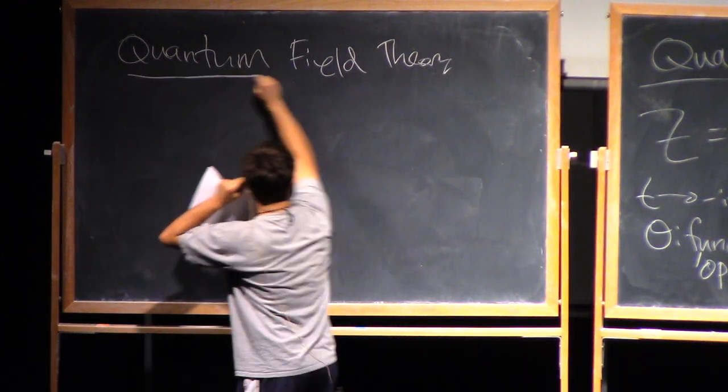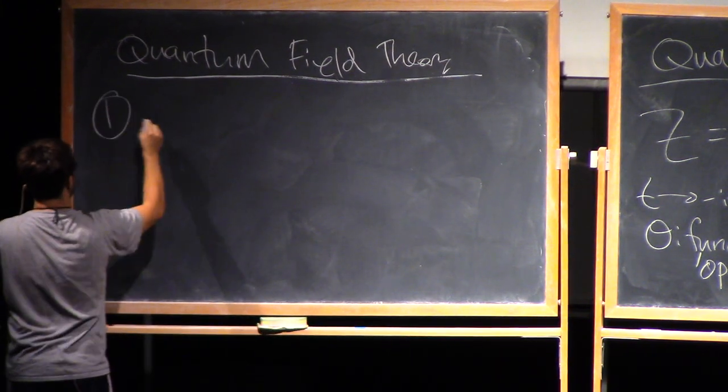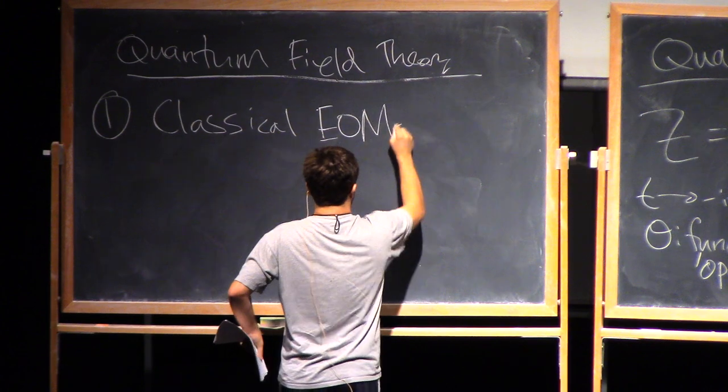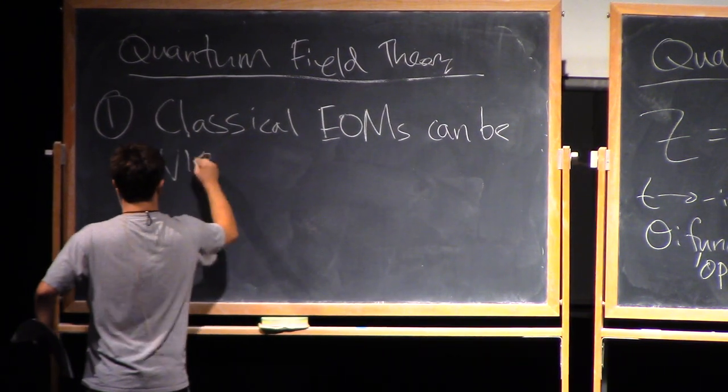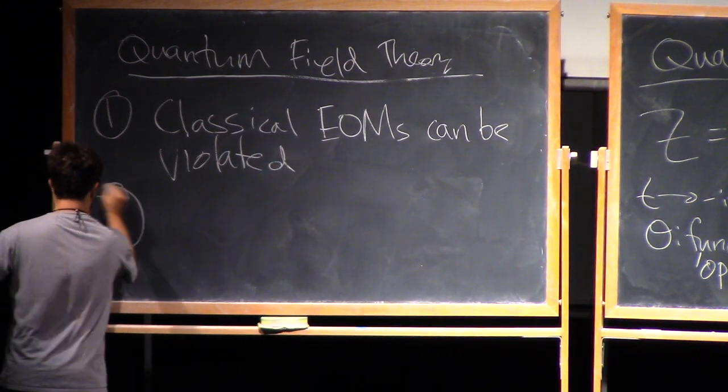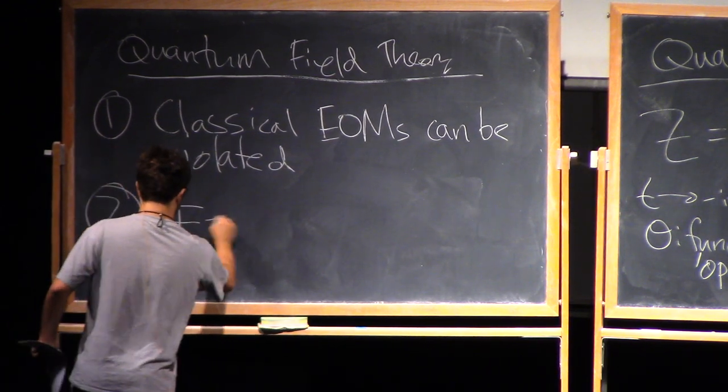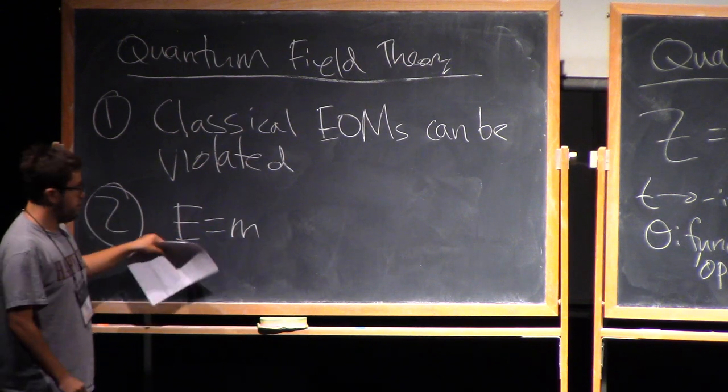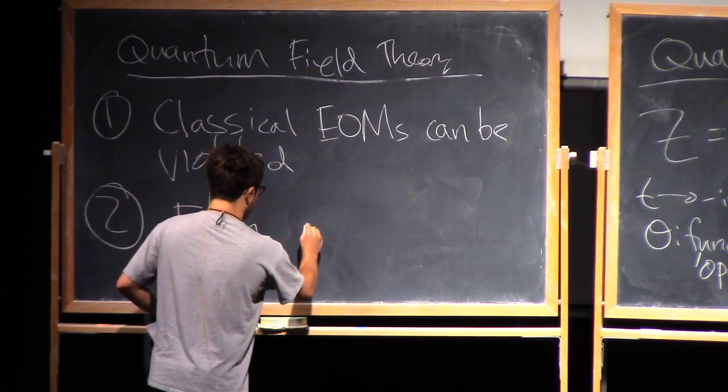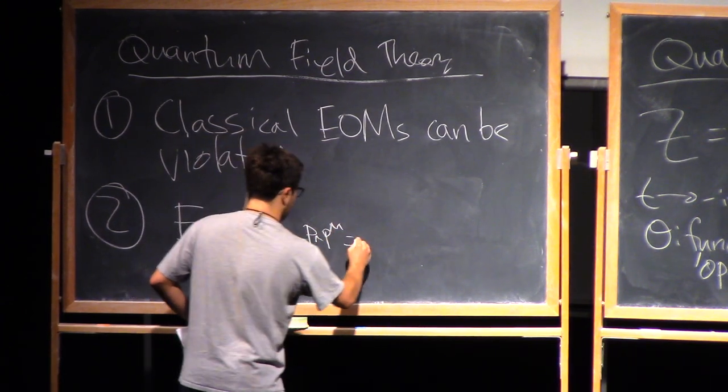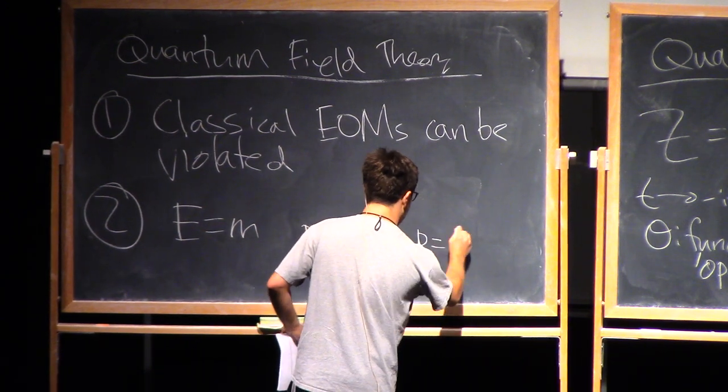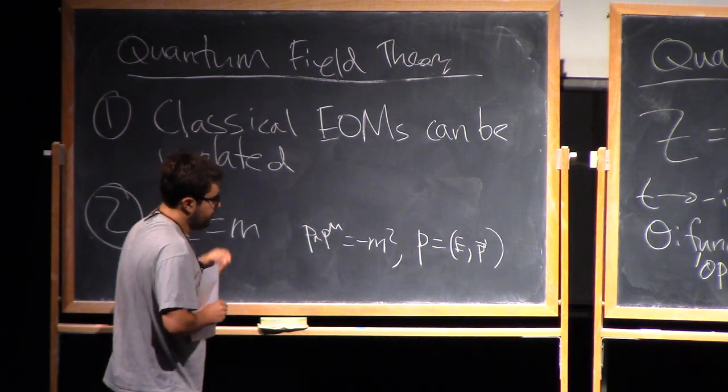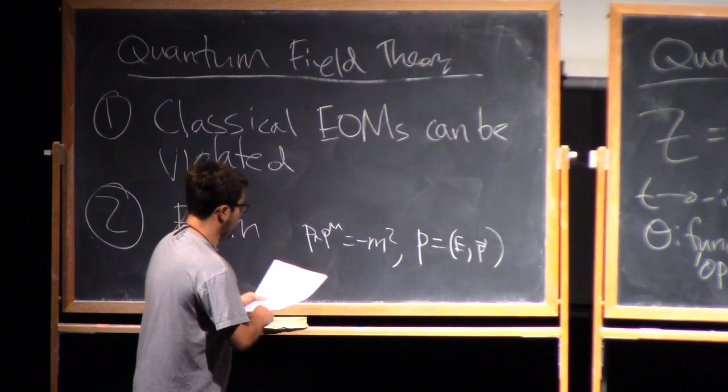Okay, so now onto quantum field theory. So this can be motivated by combining two basic observations. One is, in quantum mechanics, the classical equations of motion can be violated for short amounts of time, and then observation number two is perhaps the most classical classical equation of motion, E equals mc squared. In my units, C is 1. So I can transfer a particle into mass into energy and vice versa. Or written in a more Lorentz invariant way, I have P mu P mu equals minus M squared, where here P is the four-dimensional momentum, so it's the energy and then the three-dimensional momentum that we're more familiar with.